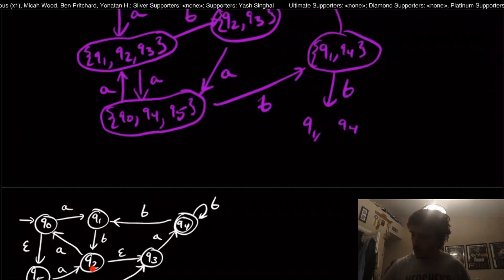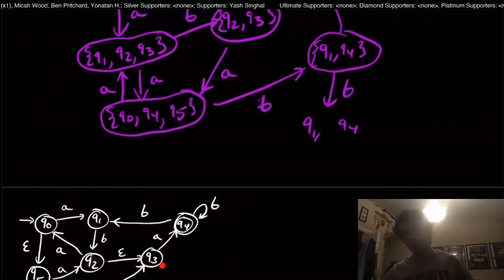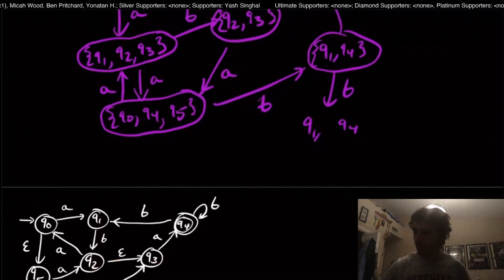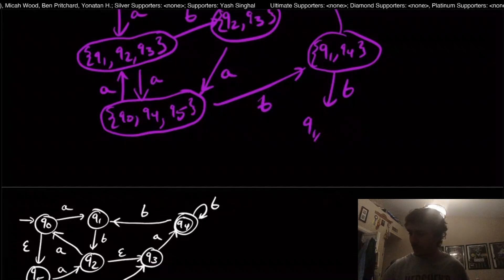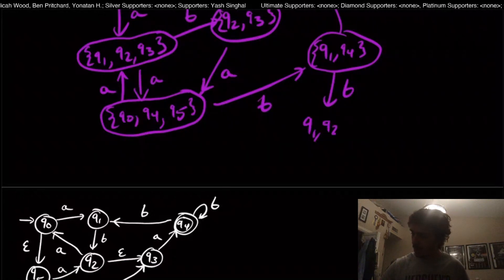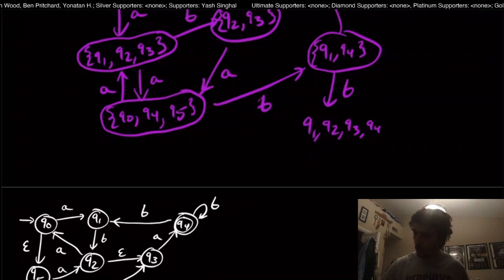But q1 on B also goes to q2, which has an epsilon transition to q3. So the B transition from {q1, q4} leads to {q1, q2, q3, q4}.